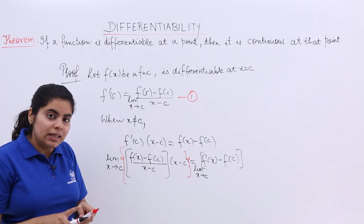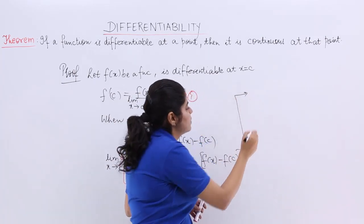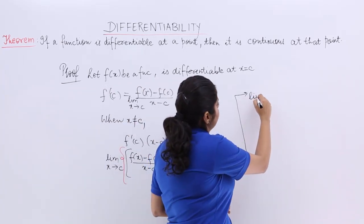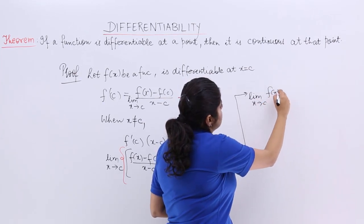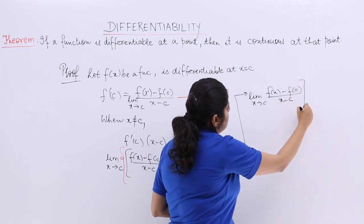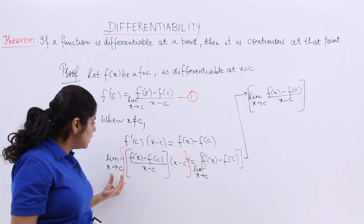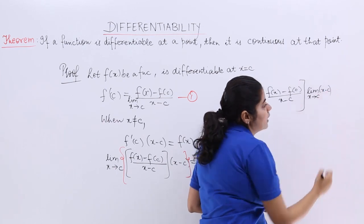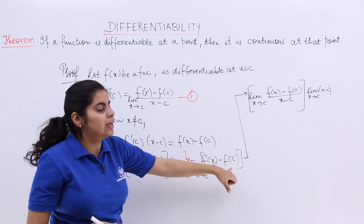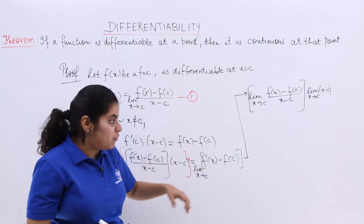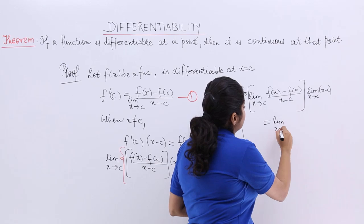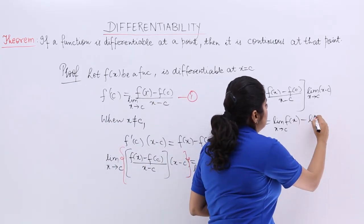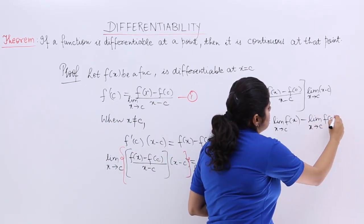So it becomes: the limit as x tends to c of [f(x) minus f(c)] divided by (x minus c), multiplied by the limit as x tends to c of (x minus c), and that equals the limit as x tends to c of f(x) minus the limit as x tends to c of f(c).